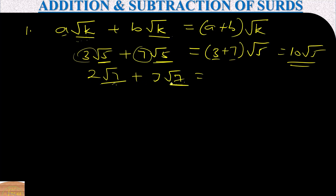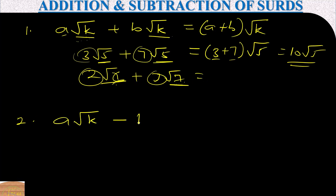They are of the same form so we can add the coefficients. Now for subtraction, take note — we have a√k minus b√k. Since they are of the same form, we can subtract and get (a minus b)√k.